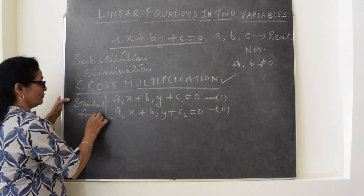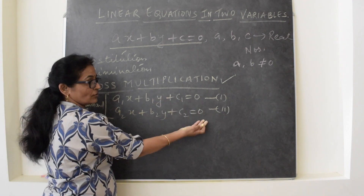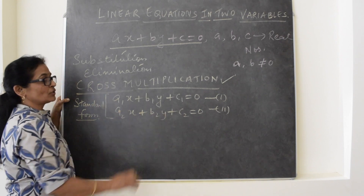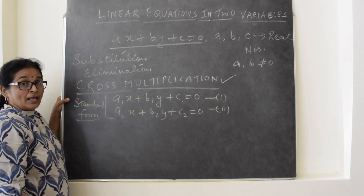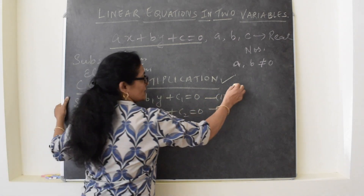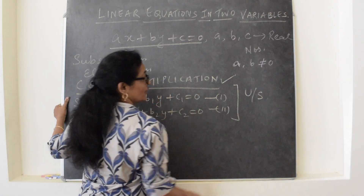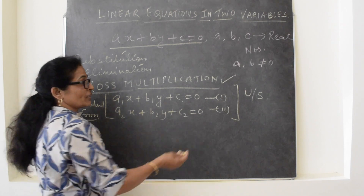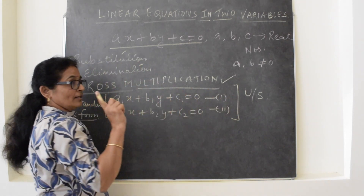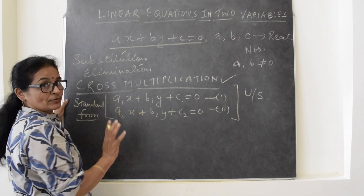If the equations are not in standard form, then you can make them so — if c1 or c2 are on the right-hand side, bring them to the left-hand side. These are the two equations in standard form. When we apply cross multiplication, the must condition here also is that the system has a unique solution — meaning there is one and only one common solution of these two equations.